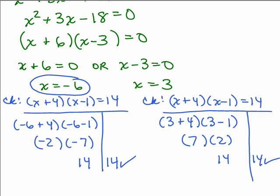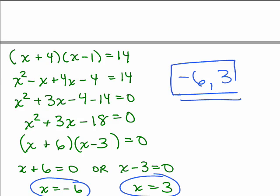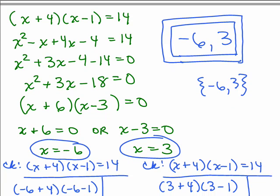So the solution to this one, the solutions are negative 6 and 3. There are two solutions. If you were going to use solution sets, you would just use the braces. Sometimes there are 5 solutions to a particular problem. In a quadratic you could have up to 2.